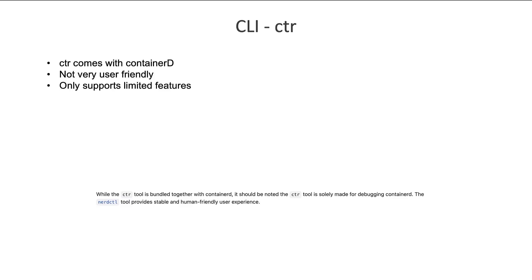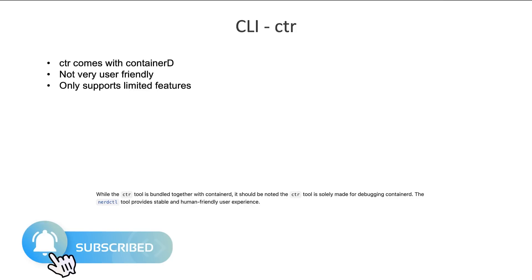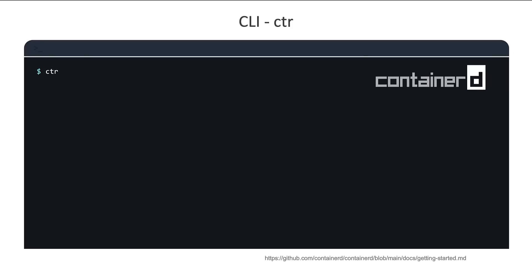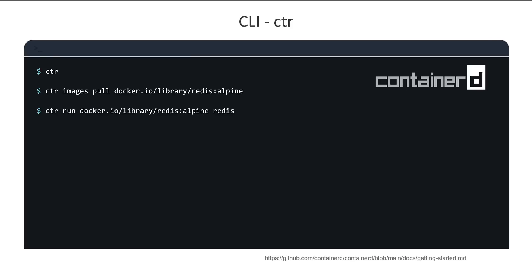Once you install ContainerD, it comes with a command line tool called CTR. This tool is solely made for debugging ContainerD and is not very user friendly, as it only supports a limited set of features. The CTR command can be used to perform basic container-related activities such as pulling images. For example, to pull a Redis image you run the CTR images pull command followed by the address of the image. To run a container, you use the CTR run command and specify the image address. But this tool is solely made for debugging ContainerD and is not to be used for running or managing containers in a production environment.